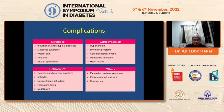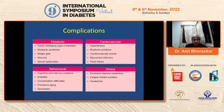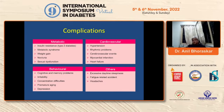Complications are metabolic, cardiovascular, behavioral, and other. The metabolic complications include insulin resistance, metabolic syndrome, weight gain, nocturia, and sexual dysfunction. Cardiovascular complications include hypertension, rhythm abnormalities, cerebrovascular events, MI, and heart failure. Behavioral complications include cognitive and behavioral issues, irritability, concentration difficulties, premature aging, depression, excessive daytime sleepiness, fatigue-related accidents, and headaches. You realize that obstructive sleep apnea has so many problems that can be addressed if you treat it.